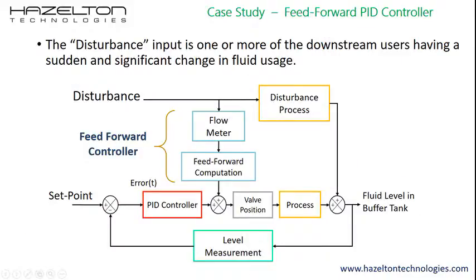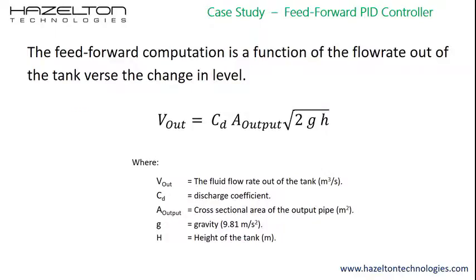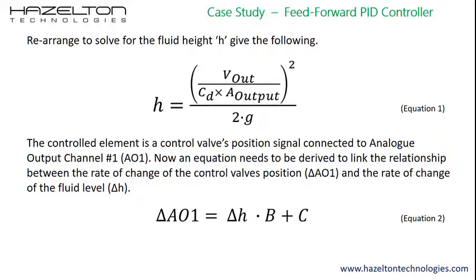The control system block diagram for the feedforward PID controller is shown here. The disturbance input is one or more of the downstream users having a sudden and significant change to fluid usage. The next step is to derive the equation for the feedforward computation. The feedforward computation is a function of flow rate out of the tank versus the change in level measured. If we rearrange the previous equation to solve for the fluid height H, it gives us equation 1 as shown here. The controlled element is a control valve's position signal connected to analog output channel 1. An equation needs to be derived to link the relationship between the rate of change of the control valve's position and the rate of change of fluid height. This is shown in equation 2.